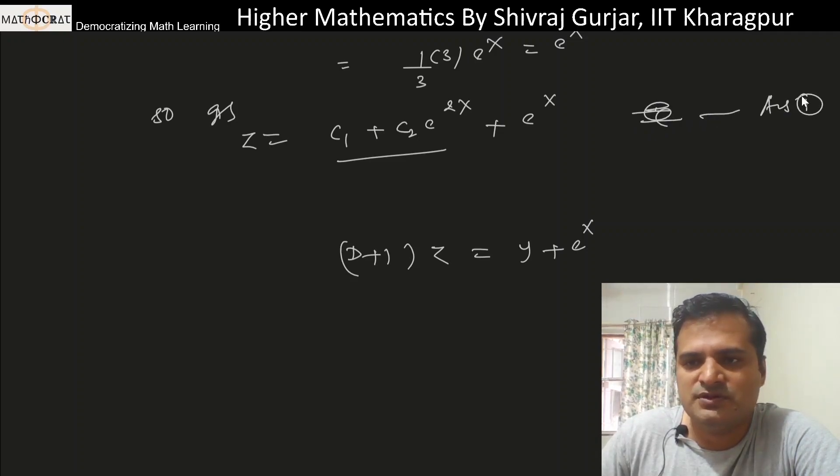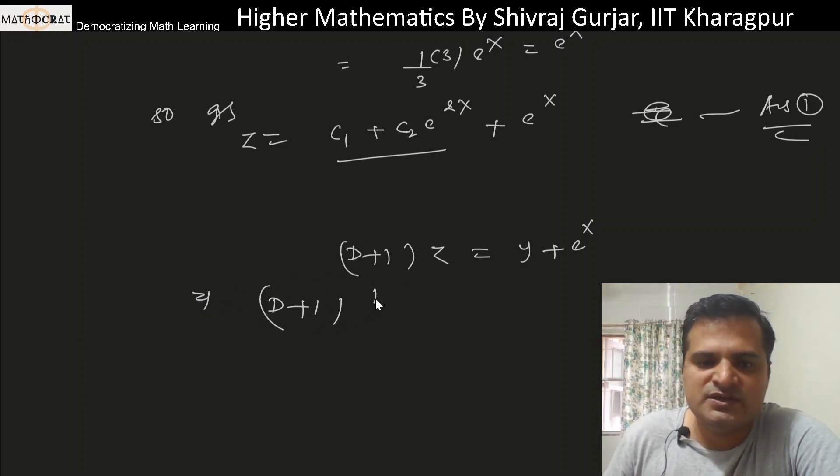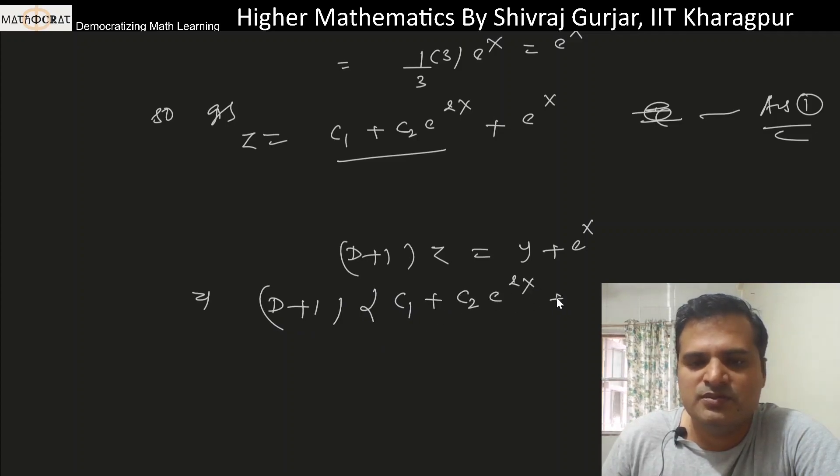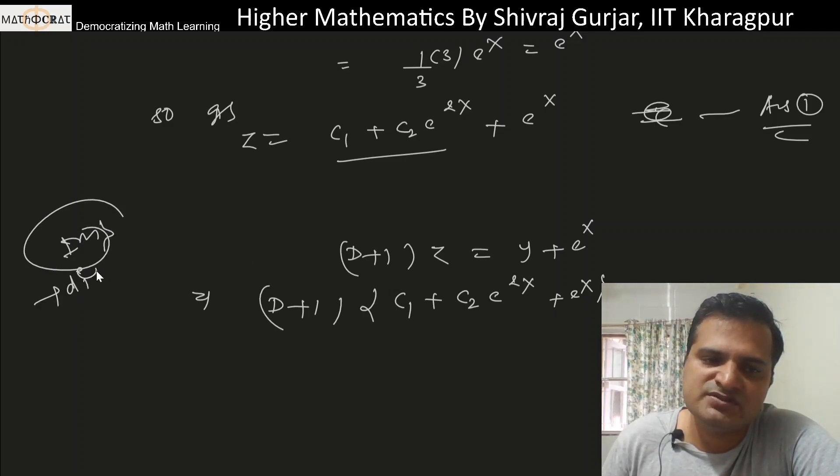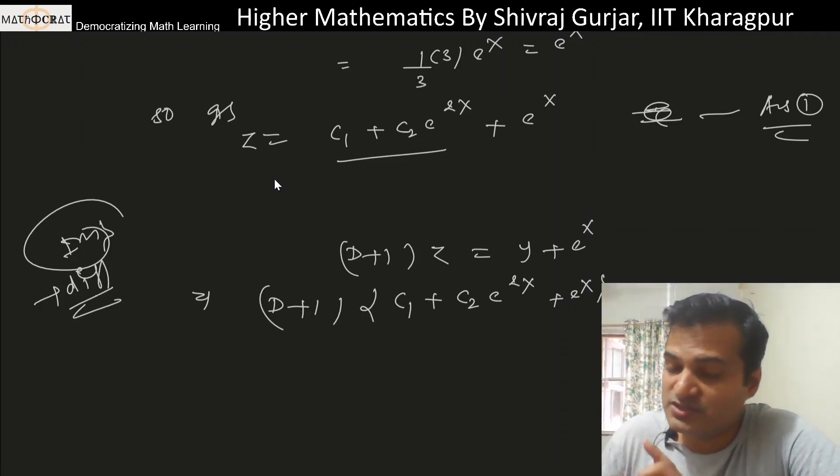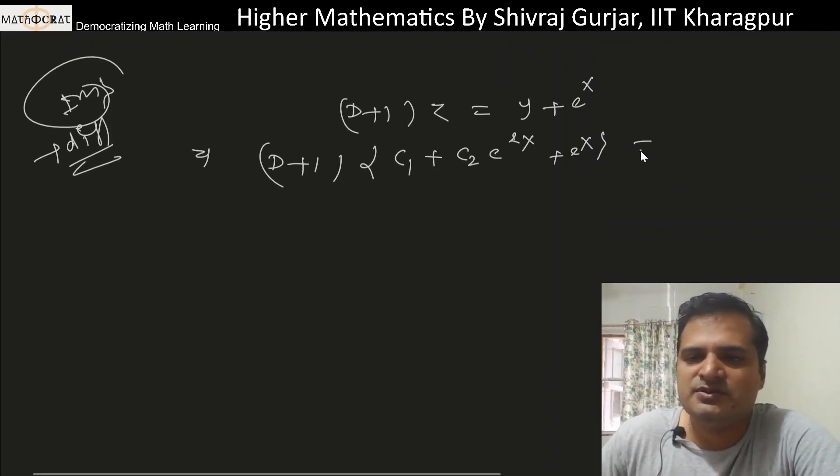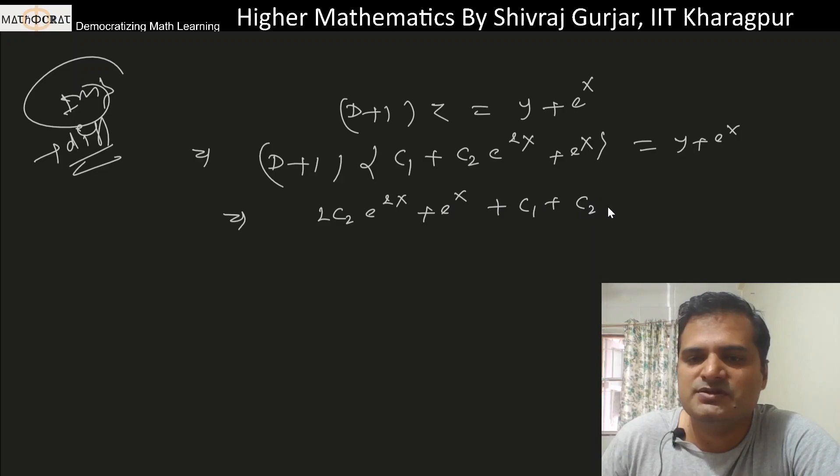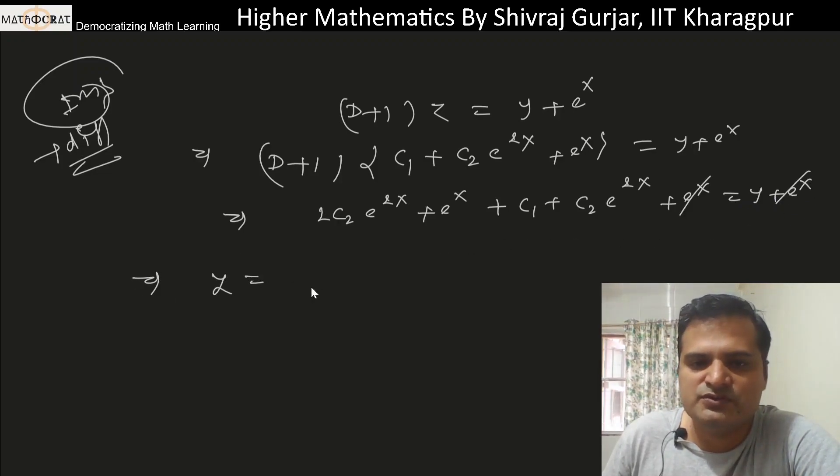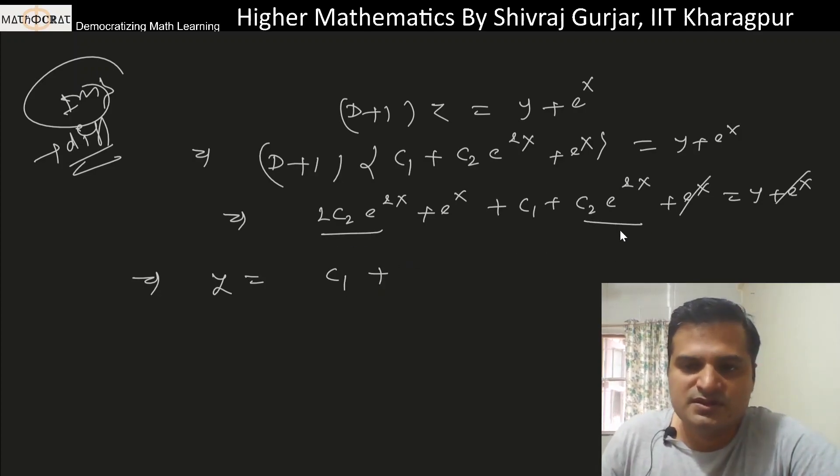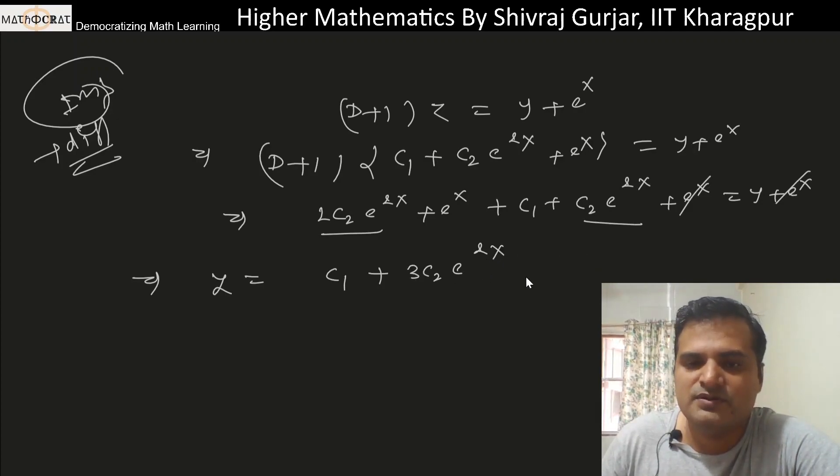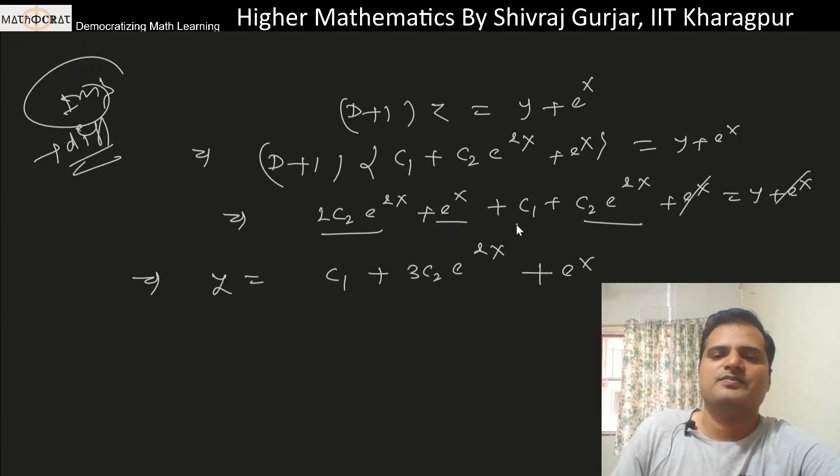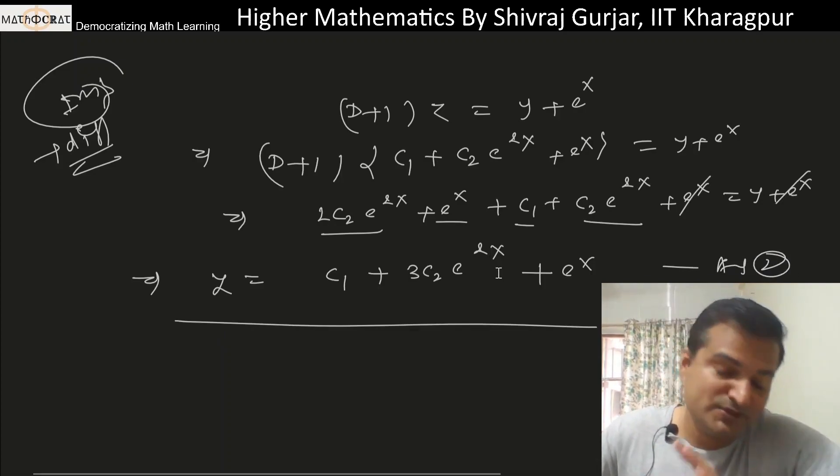So taking z = C₁ + C₂e^(-2x) + e^x, the important thing here is that when we differentiate - we choose the differentiation part, not the integration part. Differentiating: y = (D+1)z - e^x. The derivative of C₁ is 0, so y = C₁ + (differentiation gives) -2C₂e^(-2x) + C₂e^(-2x) = C₁ - C₂e^(-2x), plus e^x + e^x - e^x = C₁ + 3C₂e^(-2x) + e^x.